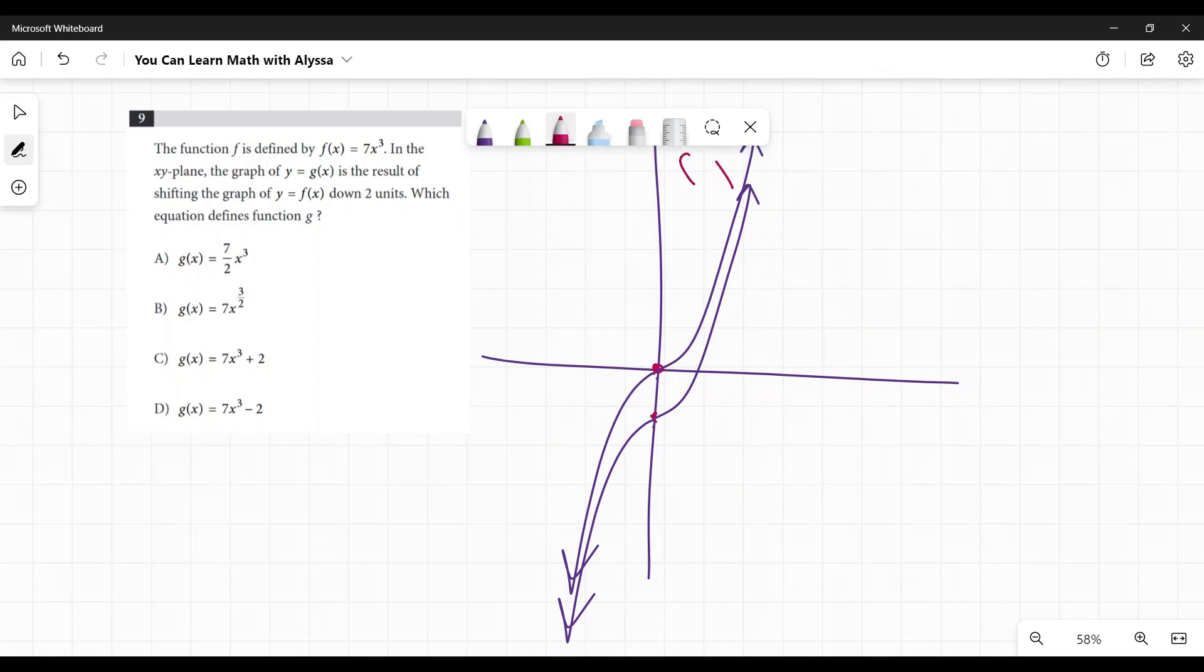That would be g(x). So this top one is going to be f(x). And again, I'm not great at drawing these, but this one shifted down two would be g(x).